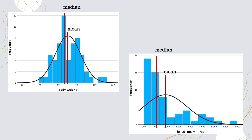Here we can see that the mean and the median are growing farther apart. Calculating each will give us a different impression of where the center of the data lies. This is where we have to be cautious and decide which measure is most appropriate to describe our data.